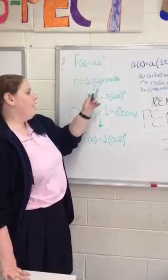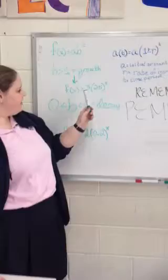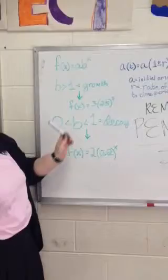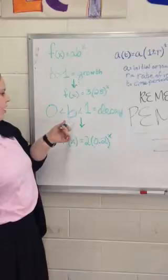For a growth equation, b is always greater than 1. Example is 3 times 2.5 to the x power. What's our base in that equation? Our base is 2.5. That makes sense.